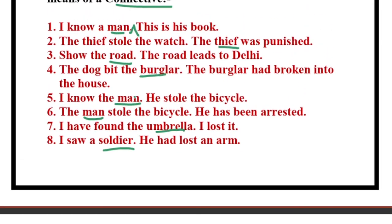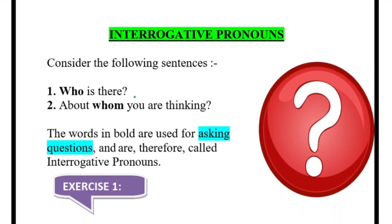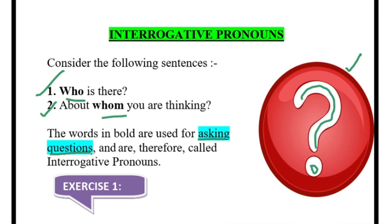Now we will come to the last kind of pronoun: interrogative pronoun. This is very easy — from the word itself you can understand. Those who cannot understand from the word 'interrogate' — for them this is a big question! An interrogative pronoun asks a question. Let's see the two examples: 'Who is there?' and 'What are you thinking about?' The words written in bold are the interrogative pronouns because they are asking a question. Wherever you are asking questions, these words are used.